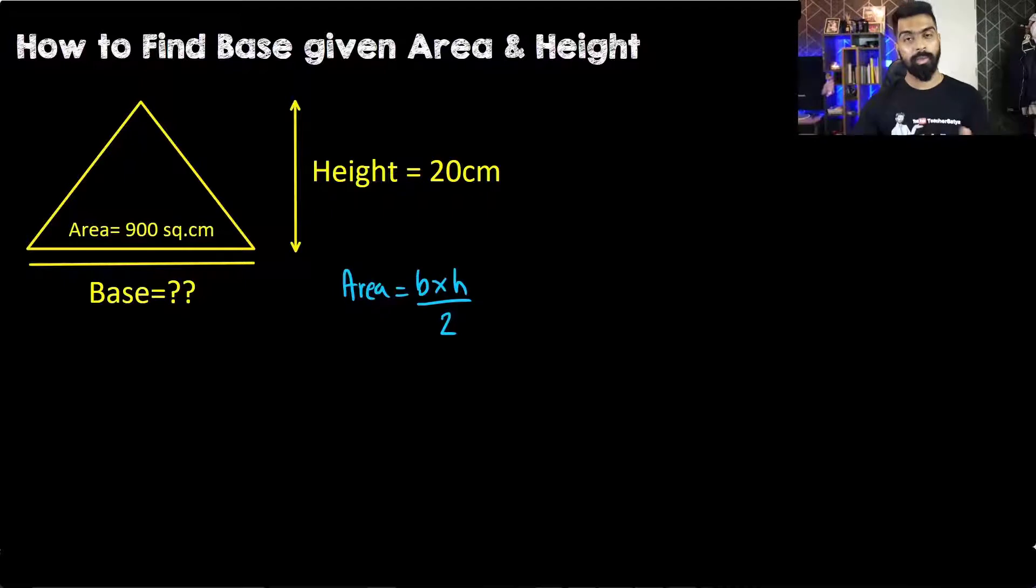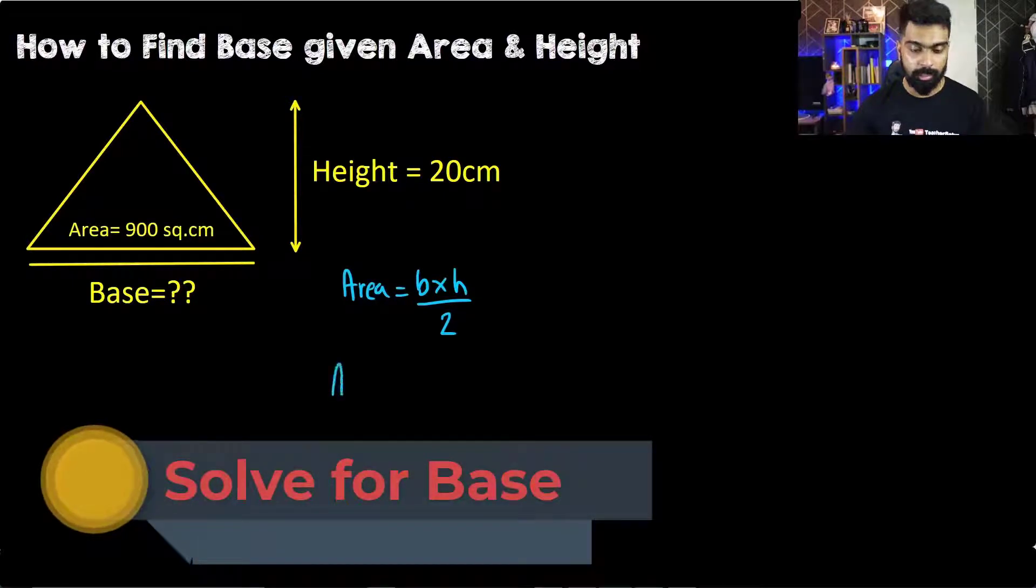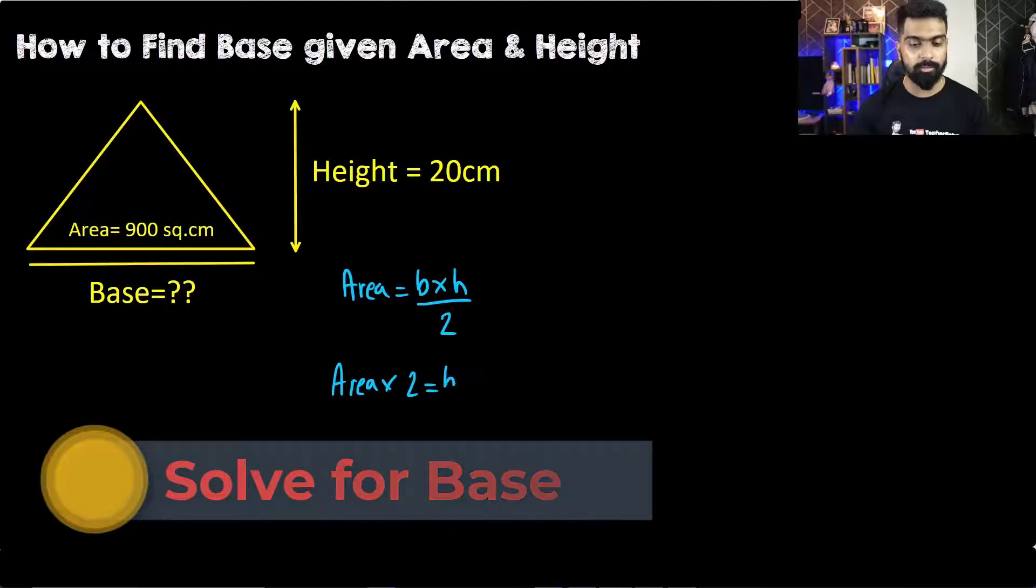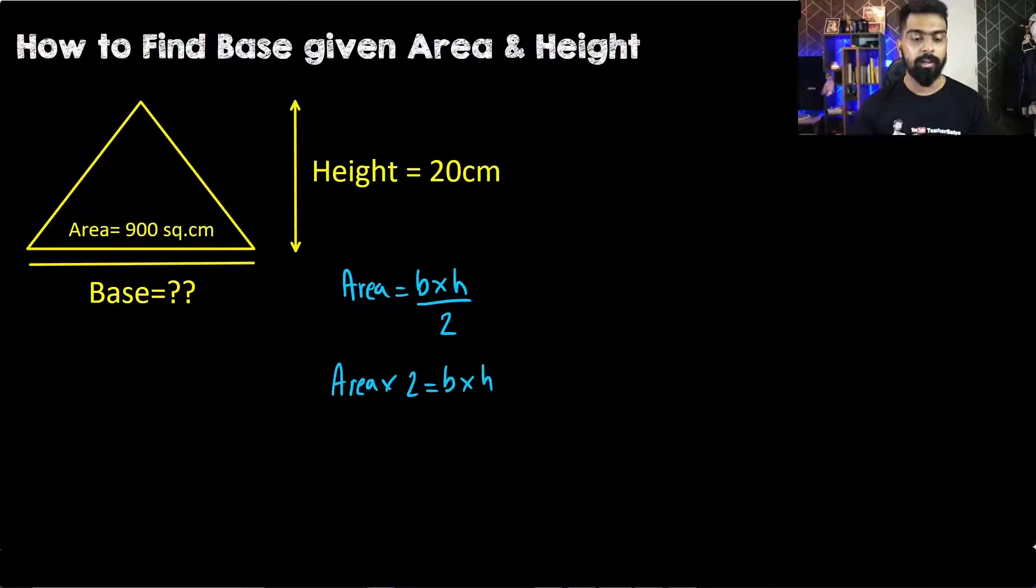Now we will use this equation and solve for base. First, I'm going to transpose 2 to the other side, so we have Area × 2 = base × height. Since we are solving for base, I'll be transposing the height to the other side, so we have Area × 2 / height = base.